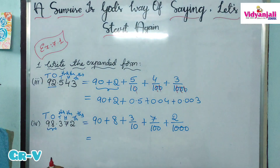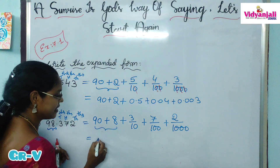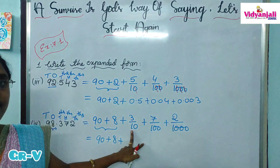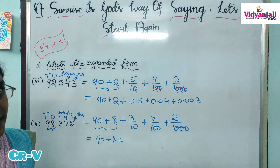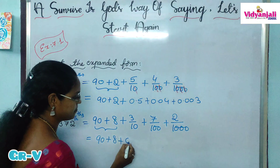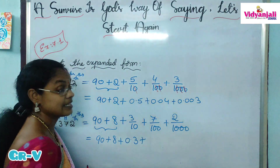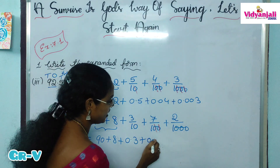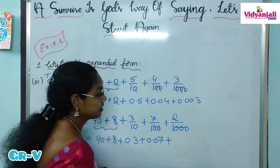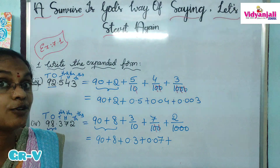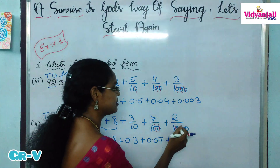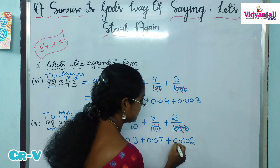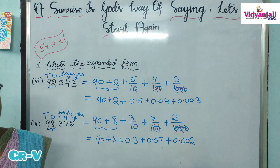And then the decimal expansion. So 90 plus 8 never change — that is the whole part. And these fractions we only have to convert as decimals. 3 by 10 means 0.3. 7 by 100 is 0.07, because 2 zeros. 2 by 1000 can be written as 0.002, because 3 zeros, so 3 digits before the point.